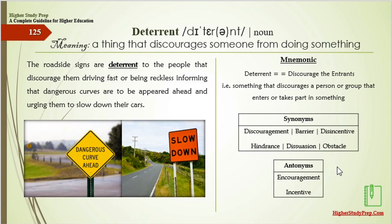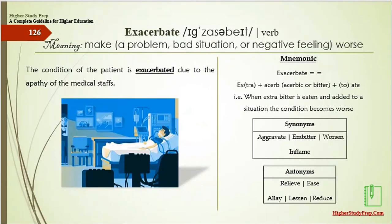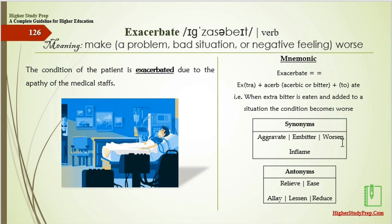The antonyms of deterrent are encouragement and incentive. Exacerbate means to make a problem or negative feeling worse. The condition of the patient was exacerbated due to the apathy of the medical staff — apathy means lack of concern. Mnemonic: exacerbate — extra a serve; one extra bitter element added to a situation makes it worse. Synonyms are aggravate, embitter, or worsen. Antonyms are relieve, ease, allay, lessen, or reduce.